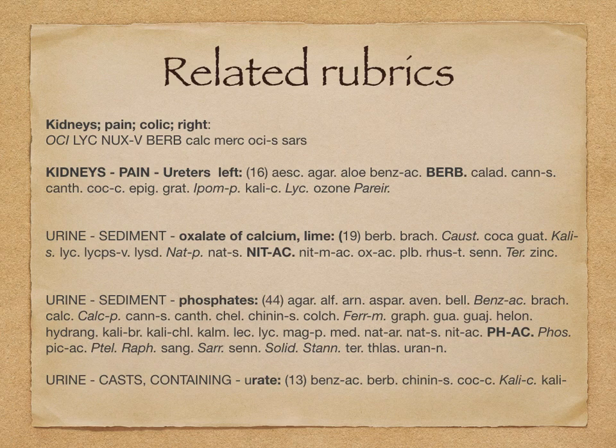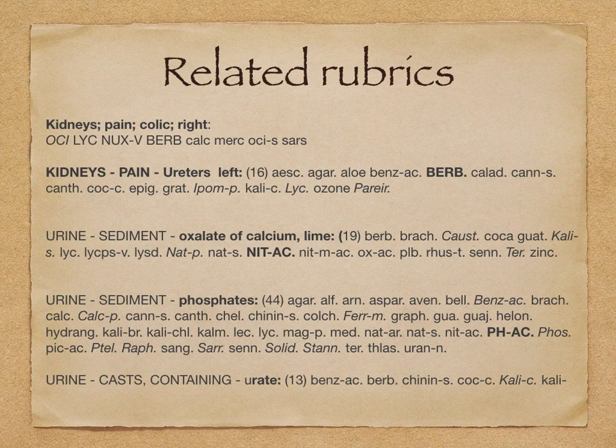Then suppose there is a urate stone — the rubric is Urine, containing casts. The most important remedies are Benzoic acid, Berberis vulgaris, and Calcarea carbonica. So depending upon the nature of the stone, the remedies are entirely different, and also on the location of the pain — whether it is right renal colic or left renal colic.